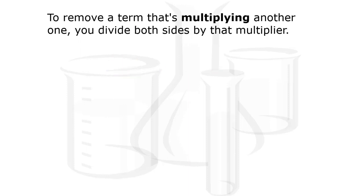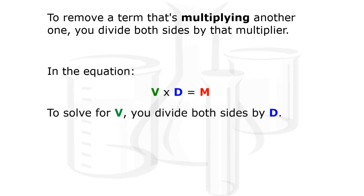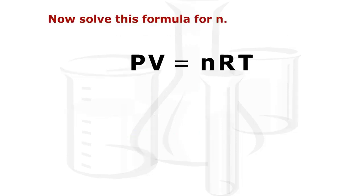To remove a term that's multiplying another one, you divide both sides by that multiplier. In the equation V times D equals M, to solve for V, you divide both sides by D. Now you solve this formula for n: P times V equals n times R times T.